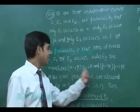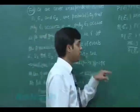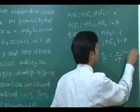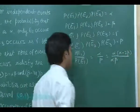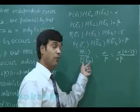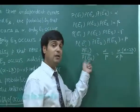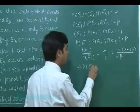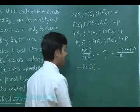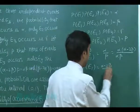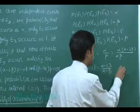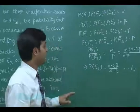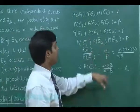Writing p in terms of alpha and beta from the given equation: p = alpha*beta / (alpha minus 2*beta). Substituting this value of p and taking the reciprocal, since P(E1_bar) = 1 minus P(E1), we simplify to get P(E1) = (alpha minus 2*beta) / (alpha minus beta).